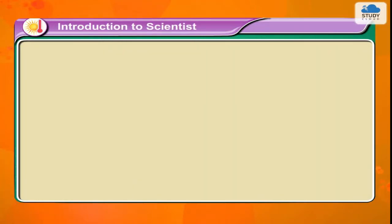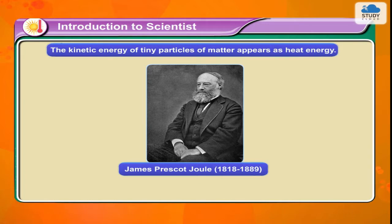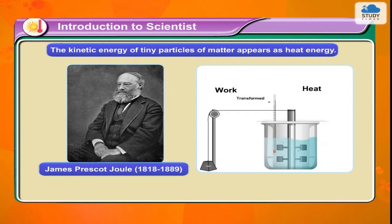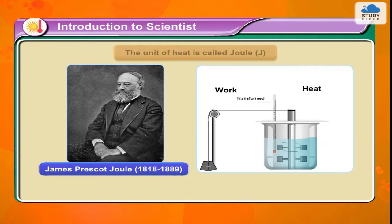Introduction to scientist James Prescott Joule, 1818–1889. He was the first person to show that the kinetic energy of tiny particles of matter appears as heat energy, and also that energy can be converted from one form to another. Conversion of heat energy to work gives the first law of thermodynamics. The unit of heat is called Joule after him.